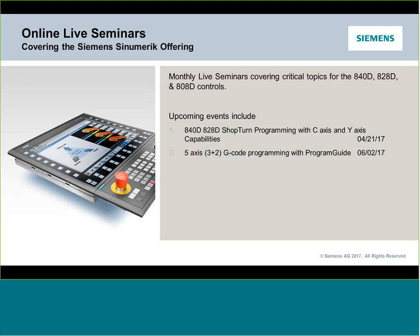I always like to give you a little teaser of what's coming up next. Our next event will explore turning capabilities, specifically programming through ShopTurn on a machine that has C-axis and Y-axis capabilities. After that, we'll get into some five-axis content, looking at programming a three-plus-two type of orientation through G-code with Program Guide, and then further advanced turning content including sub-spindles and multi-channel machines.